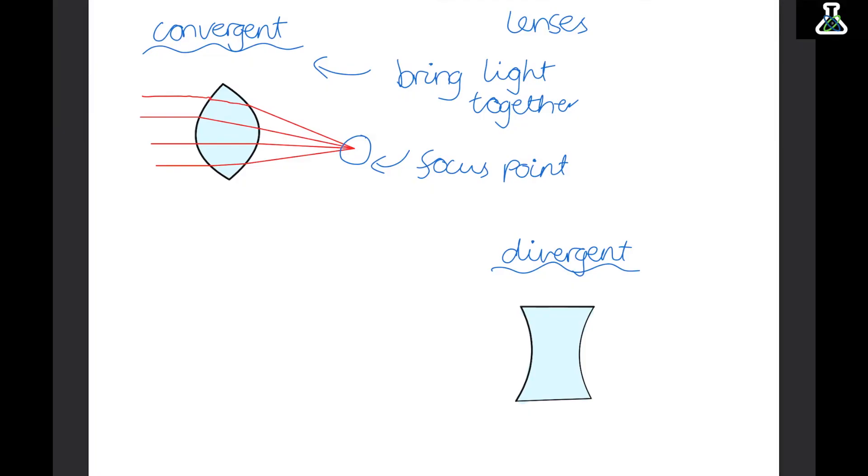Divergent lenses are the complete opposite - they spread light out. As light waves come over to the lens, they are refracted that way and then out. This keeps happening with lots of waves, causing them all to spread out in different directions.